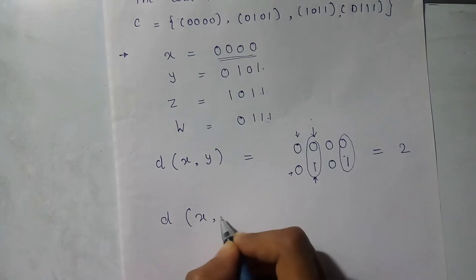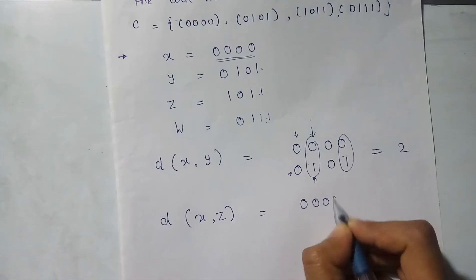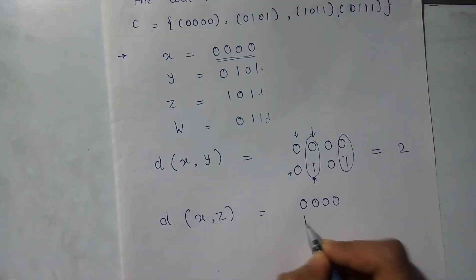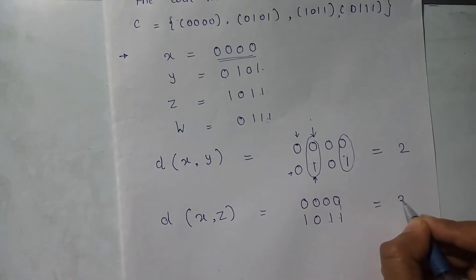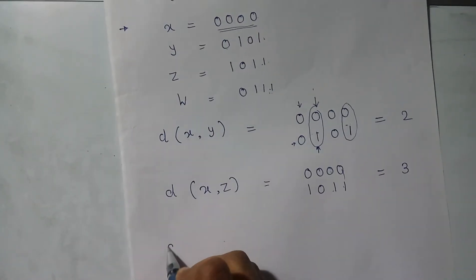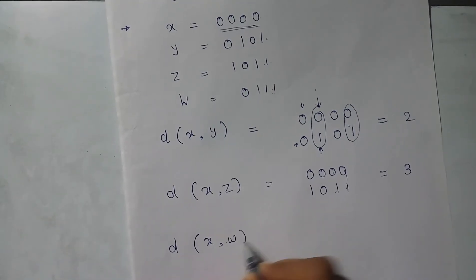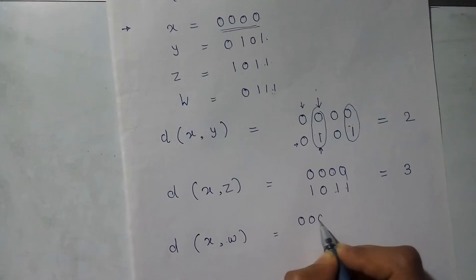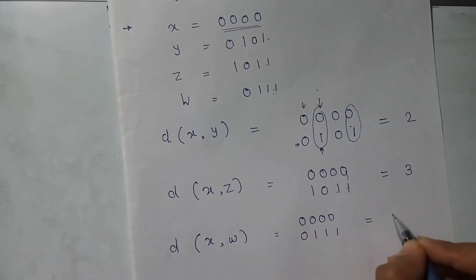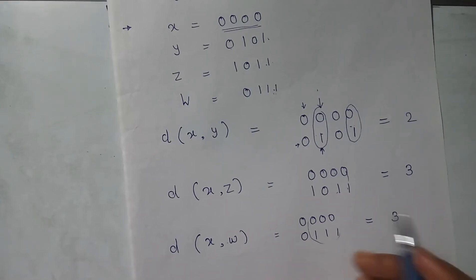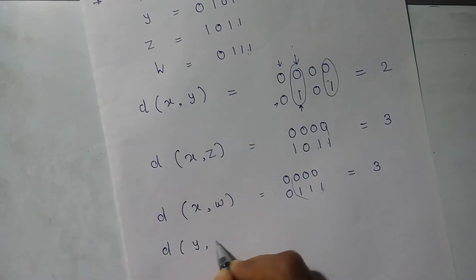For x and z: the sent codeword is 0000 and received is 1011 — three bits are different, so the Hamming distance is 3. For x and w: 0000 and 0111 — three bits are different, so the Hamming distance is 3. Similarly, for y and z: